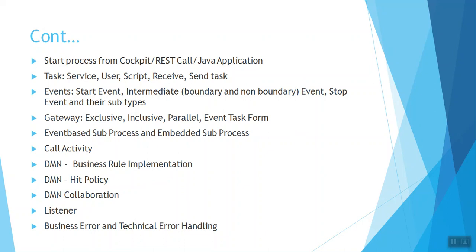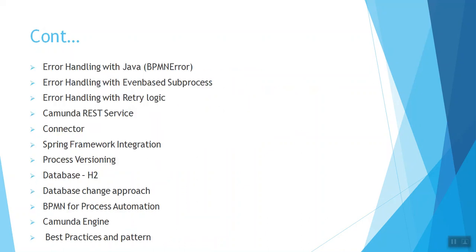We'll also cover DMN multi-result handling and collaboration of multiple DMNs together. Then different types of listeners, such as execution listeners and task listeners. Business errors and technical errors will be covered — how to deal with each, including retry logic. For example, if there's a technical glitch and you want to retry calling an external REST service three times, that type of scenario can be handled.